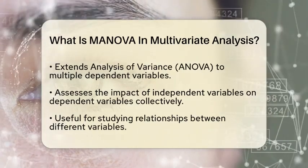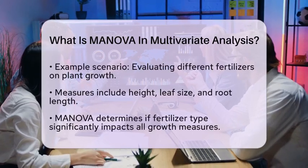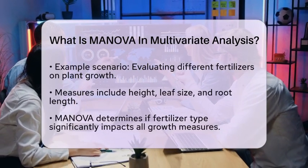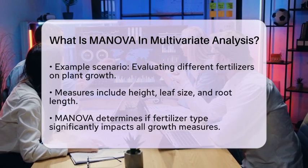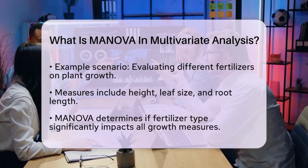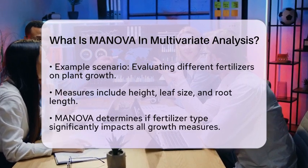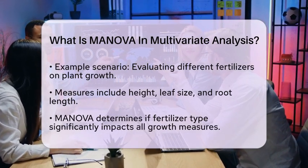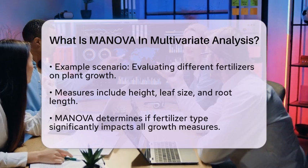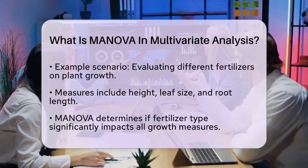In practical terms, MANOVA helps in understanding the relationships between variables. For instance, if you are studying the effect of different fertilizers on plant growth, you might measure not just height but also leaf size and root length. MANOVA can help determine if the type of fertilizer used has a significant impact on all these growth measures at once.